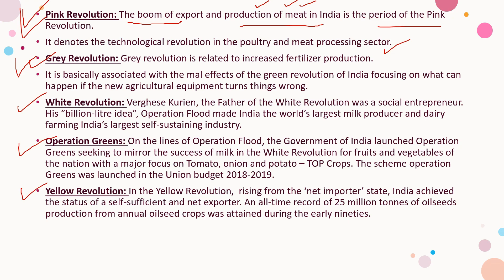Gray Revolution is related to increased fertilizer production. It is basically associated with the negative effect of the Green Revolution in India, focusing on what can happen if new agriculture equipment goes wrong. If asked which revolution the Gray Revolution is directly related to, the answer is the Green Revolution, because without fertilizer the Green Revolution is not possible.